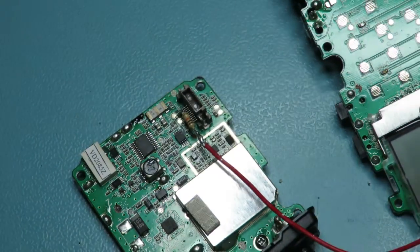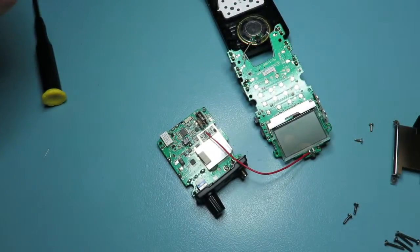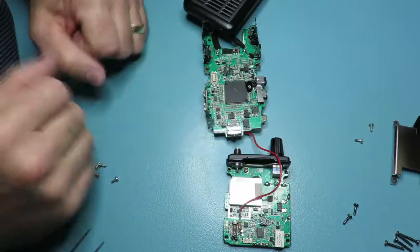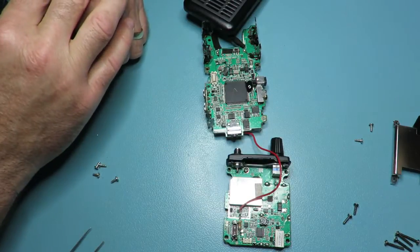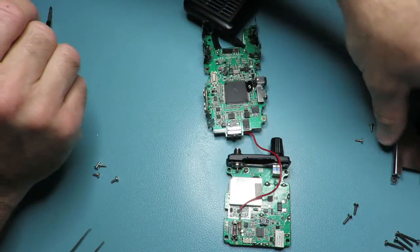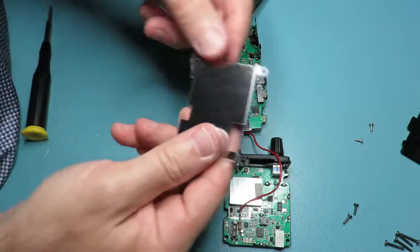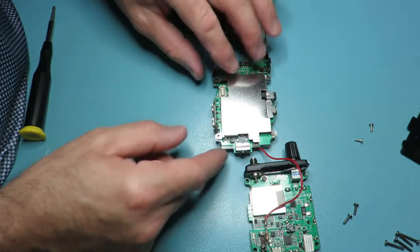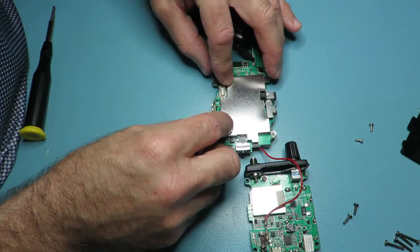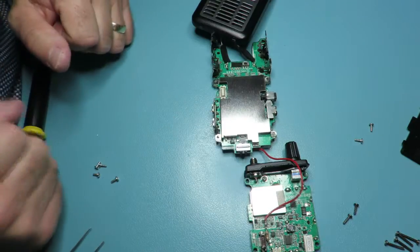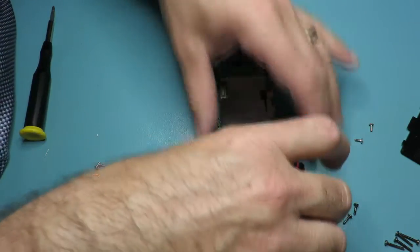So, let's reassemble it and we can give it a try. So, the first thing we need to do is basically to put the shield back on. Again, that just clips on.